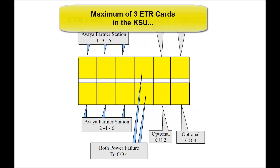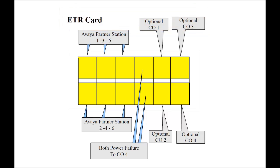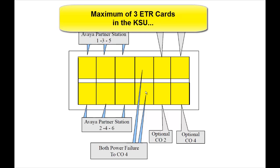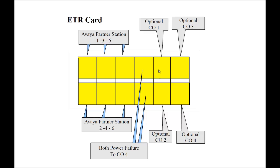Now the ETR card — Enhanced Tip and Ring — is the card you would use if you're going to be using Partner 18D, 34D, or 6D type telephones. It has six ports for those phones: 1 through 6, for up to six telephones. Ports 7 and 8 are power failure positions. Ports 9, 10, 11, and 12 are ready for CO lines; however, you must install the optional ATM trunk card — analog trunk module — in order for them to work. There are no CO lines by default on an ETR card.